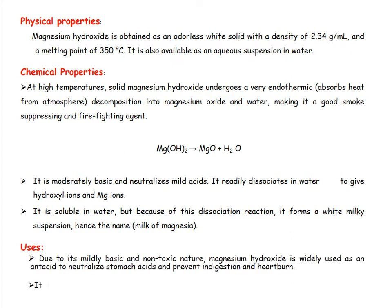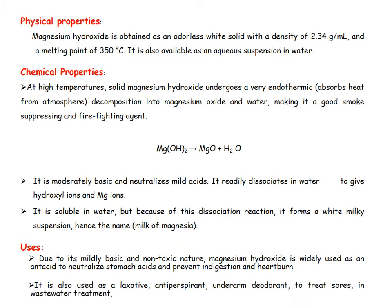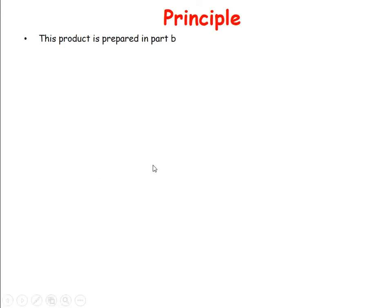Uses of magnesium hydroxide: it is a mild basic, non-toxic substance used as an antacid to neutralize stomach acids and prevent indigestion and heartburn; also used as a laxative, antiperspirant, deodorant, in treatment of sores, wastewater treatment, and as a fire retardant. The principle behind this experiment: milk of magnesia is prepared by a precipitation method and in part by hydration.